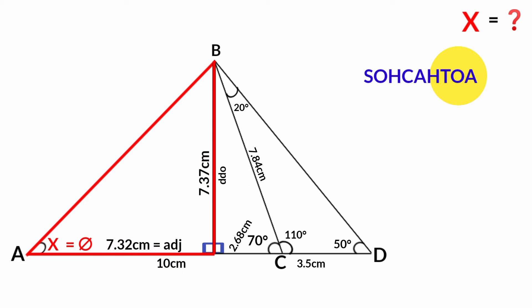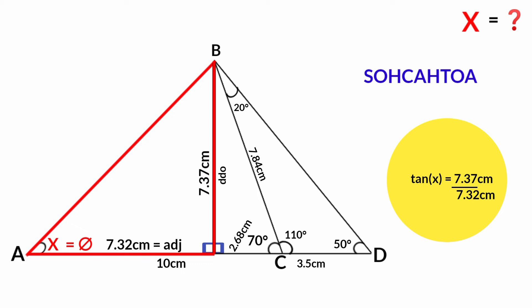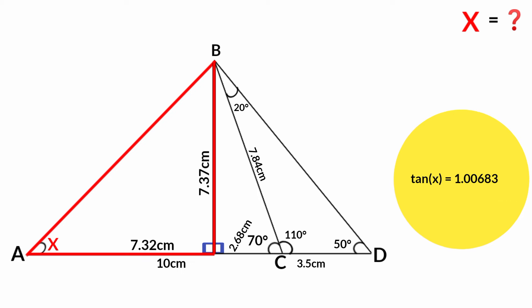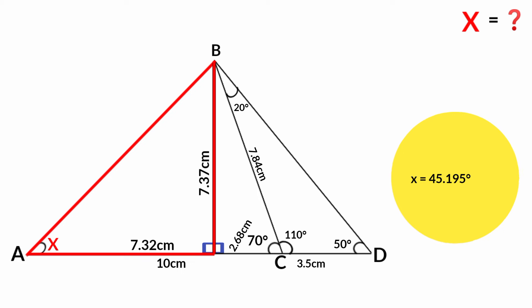From this, tan theta equals opposite over adjacent. Theta is x, the opposite is 7.37 centimeters, and the adjacent is 7.32 centimeters. So tan x equals 7.37 over 7.32, which is 1.00683. To find the exact value of x, we take the inverse tan of 1.00683: x equals tan inverse of 1.00683, which is 45.195 degrees.